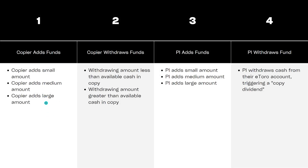One is what happens when the copier adds funds to a copy independent of the PI. So you've got a situation where you add a small amount like $10, a medium amount like $200, or a large amount like $1,000. So we're going to look at all three of those situations. And you've got the other situation where you withdraw funds, which previously you could only withdraw what was in the available cash. But it's actually changed now and you can withdraw more money than you ever could.